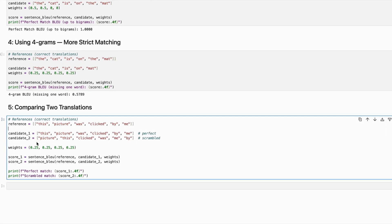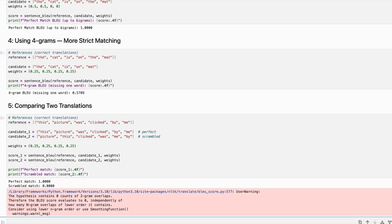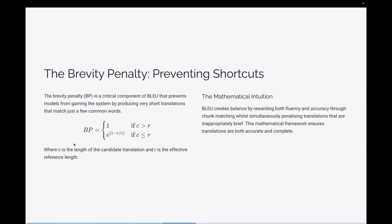And the last one, if you can see, is an example of two candidates where one is in the right sequence and the other one is kind of mixed up, and then you have the reference sentences. Now if you look at how the scores are, since it has the unigram, bigram, trigram, and four-gram, you can see that the perfect match has one score and the scrambled one has zero score.